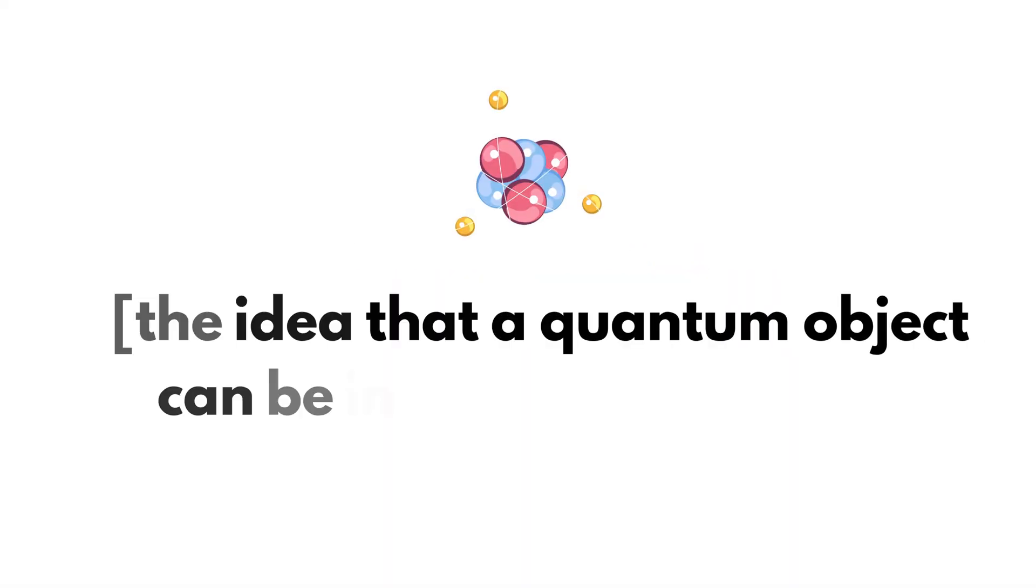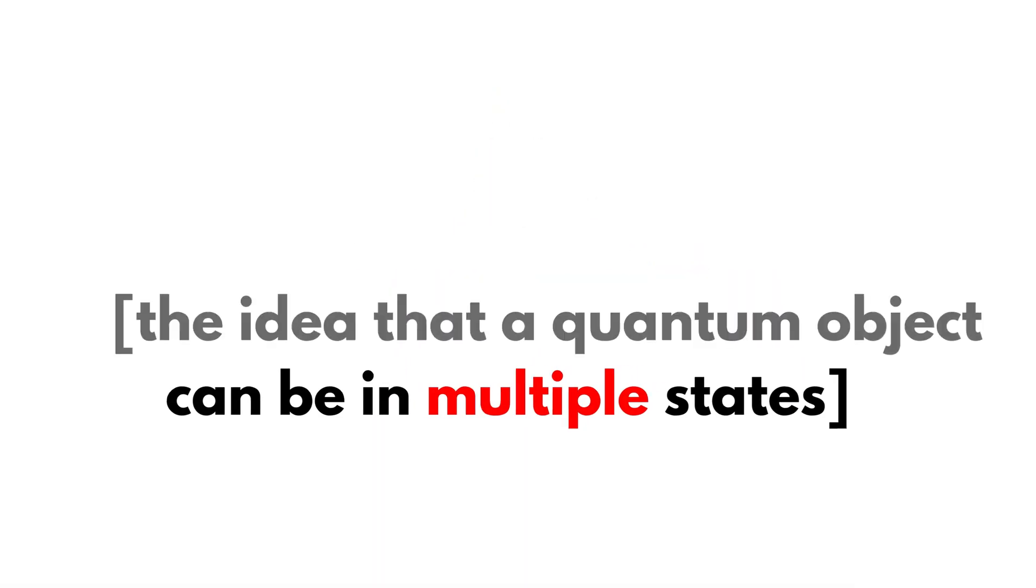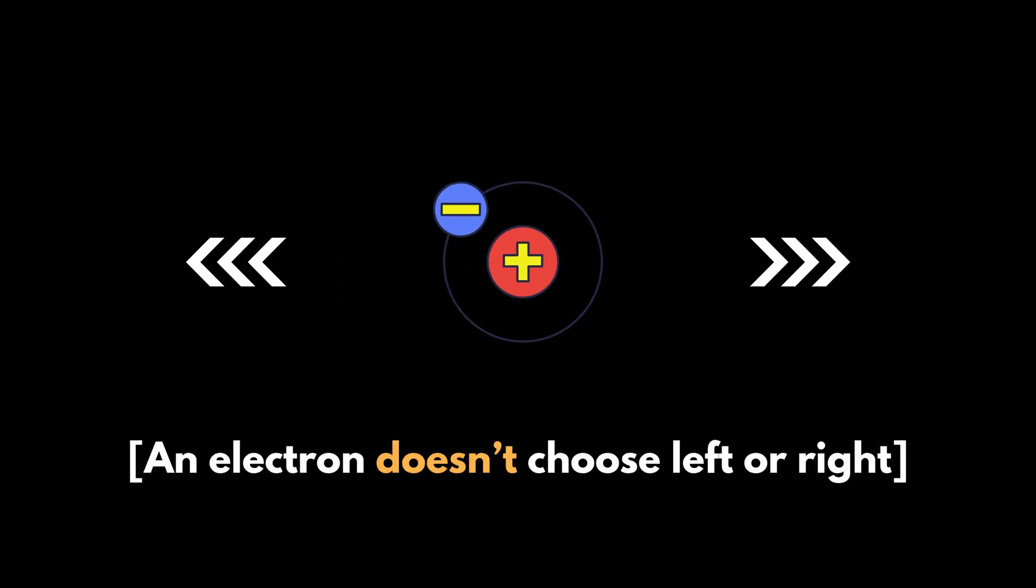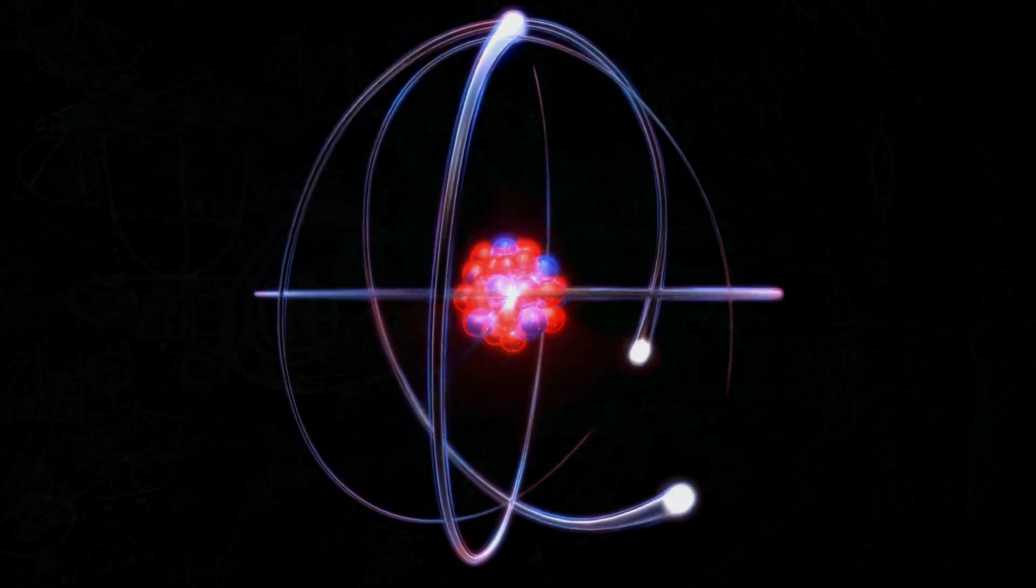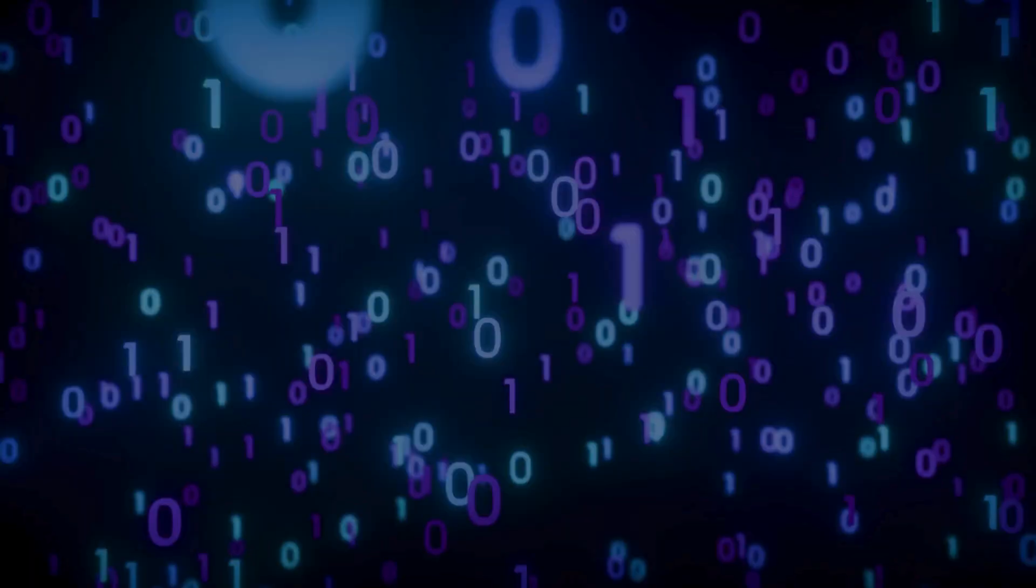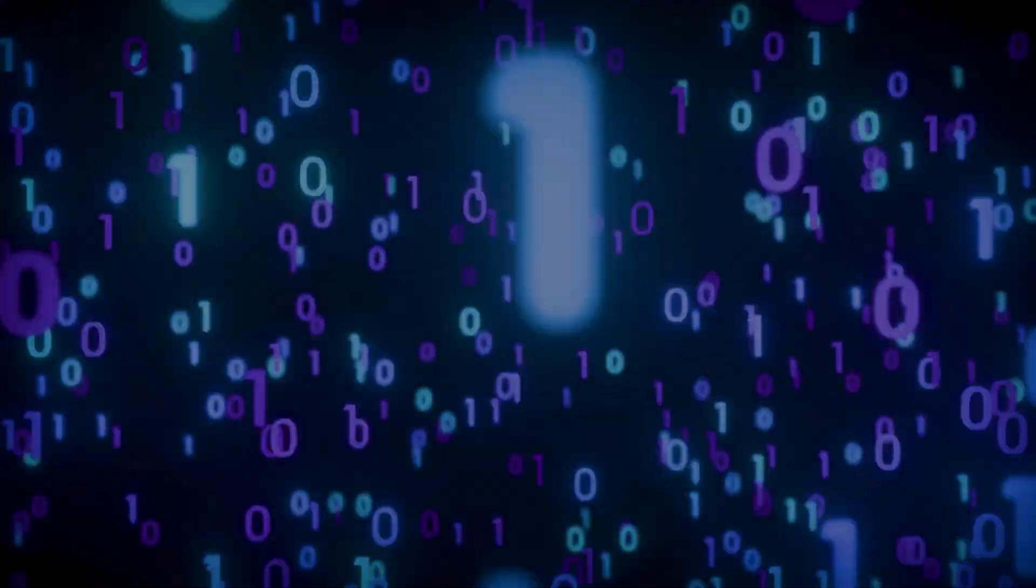Superposition is the idea that a quantum object can be in multiple states at the same time. An electron doesn't choose left or right. It's both. It doesn't spin up or spin down. It spins both ways until measured. This isn't just theory. In quantum computers, qubits hold a zero and one at once, vastly increasing power.